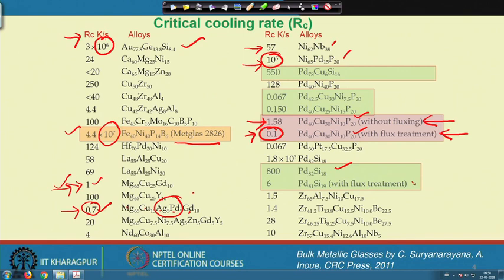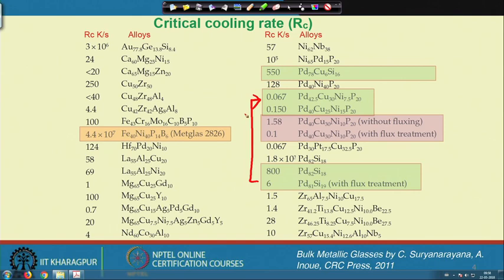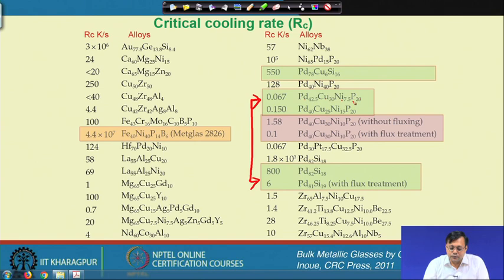Looking at palladium-silicon with flux treatment, the cooling rate is much slower — so we improve glass forming ability again. Comparing palladium-copper-nickel-phosphorus (quinary) with palladium-silicon (binary): by adding multiple elements we have enhanced the glass forming ability. Adding another two elements improves GFA. However, this may not be true in all cases — you cannot keep adding elements and always make a better glass. Many different calculations and trials are needed, which we will discuss in detail.